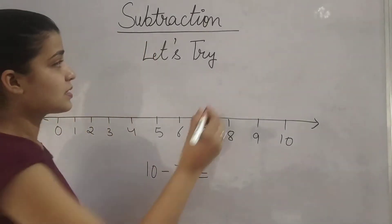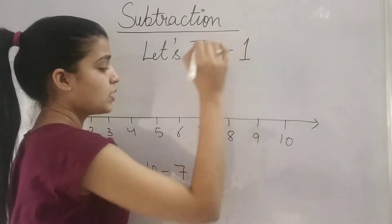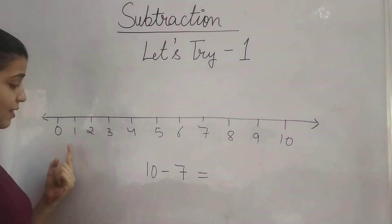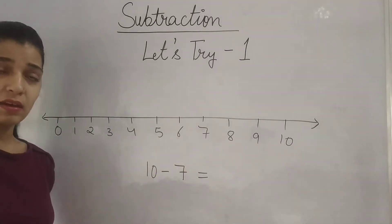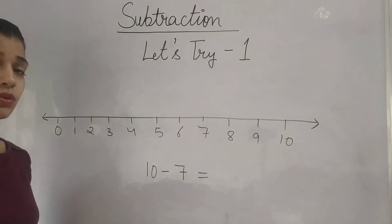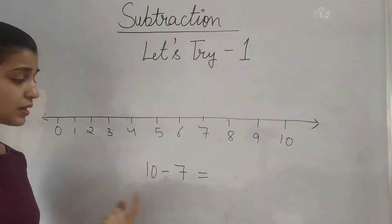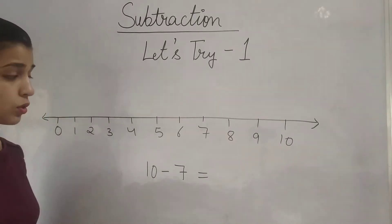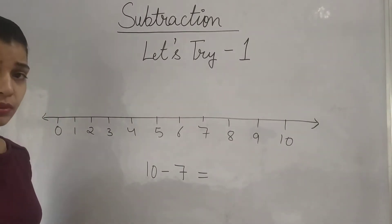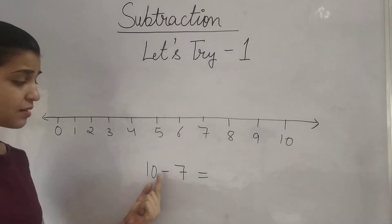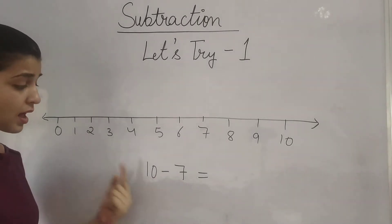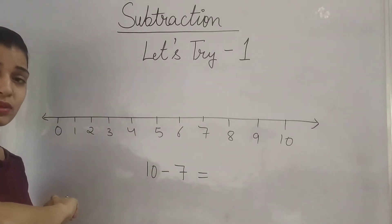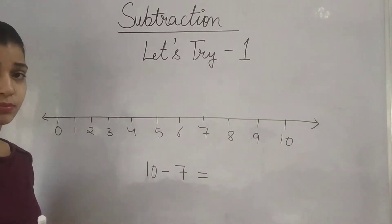So let's start. This is 'Let's Try 1.' So this is the number line and there are some numbers on the line. Now what you have to do: you have to subtract 7 from 10. So yesterday I told you — 10 minus 7 means how many steps you have to go back? 7 steps.